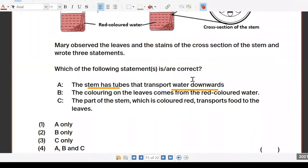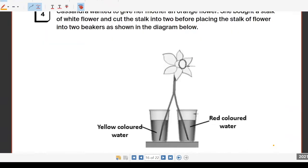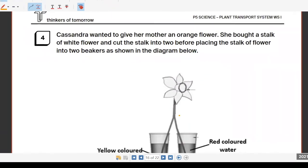Why is C wrong? 'Parts of the stem which is colored transport food to the leaves.' Water is transported, yes? So C is wrong because it's supposed to be water, not food. So this is wrong, correct. Good. Answer is B. I will ask why you didn't choose the option also, so make sure you know why you didn't choose the option.